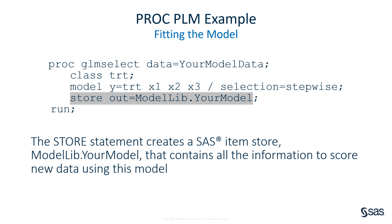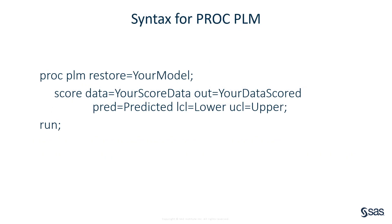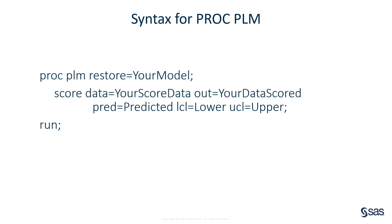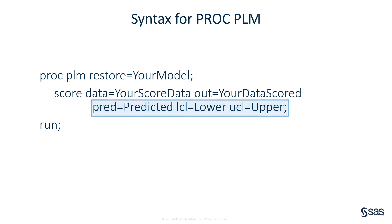Get into the habit of using the STORE statement, especially with your production models. Model item stores can save you time and effort if you need to refit the model later. To score a new data set using PROC PLM, restore the SAS item store using the RESTORE equals option in the PROC PLM statement. Then use the SCORE statement to score a new set of data as specified in the DATA equals option. The OUT equals option specifies a SAS data set to contain the predictions. You can also request additional statistics about the prediction, like upper and lower confidence limits.